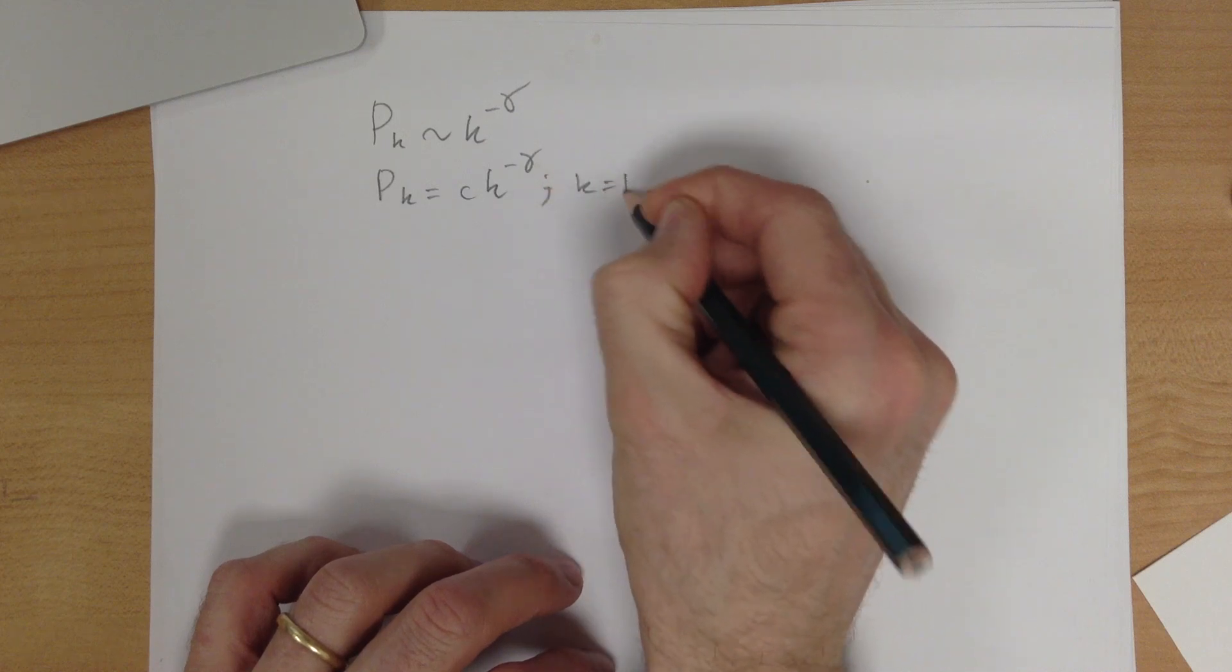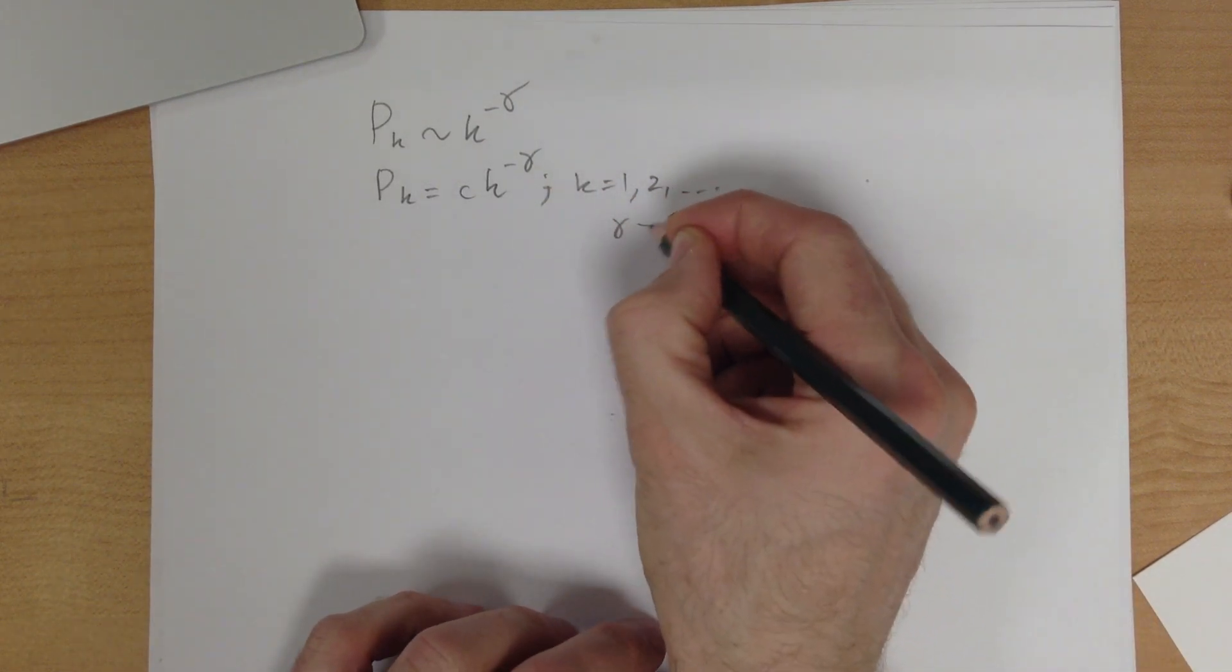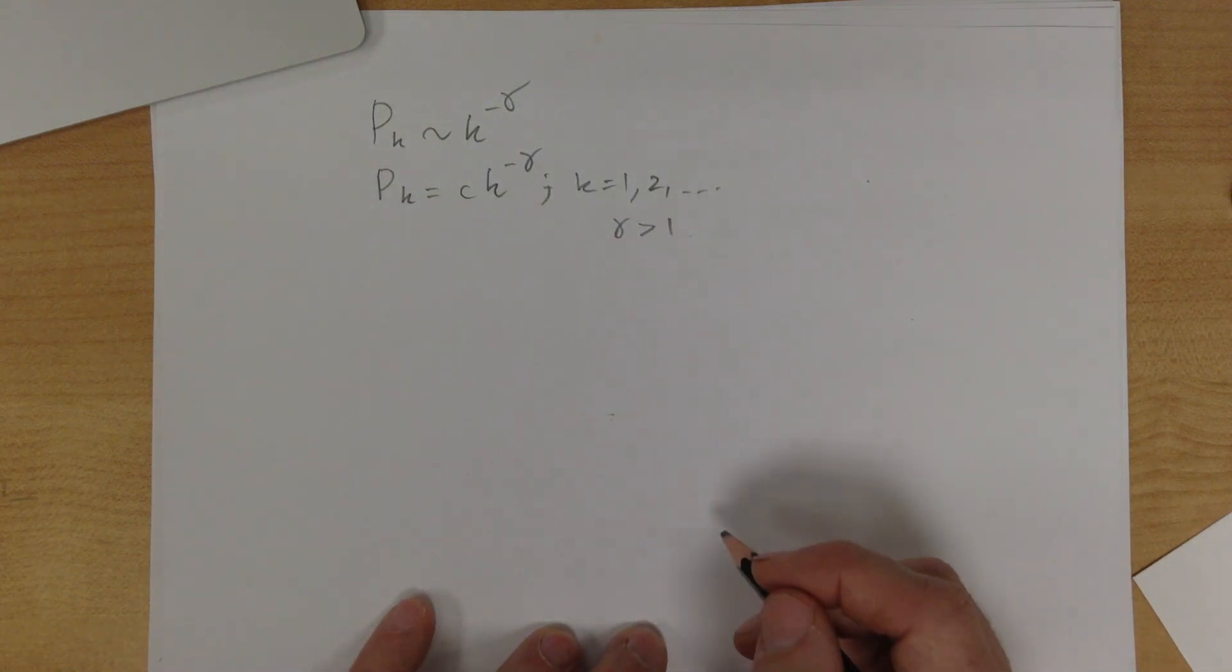K equals one, two, right. Okay, so we know all about this. We know gamma is greater than one. So we are good people.